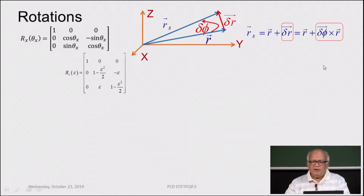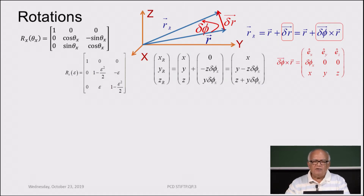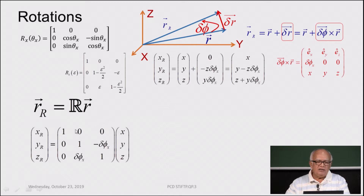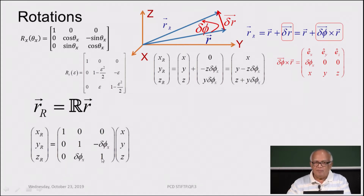You can write this cross product as a determinant, and write the transformation from (x, y, z) to the rotated coordinates (x_r, y_r, z_r) through a matrix equation. You can write this rotation matrix as: (1, 0, 0; 0, 1, −δφ; 0, δφ, 1), because this is the rotation matrix for rotation about the x-axis.